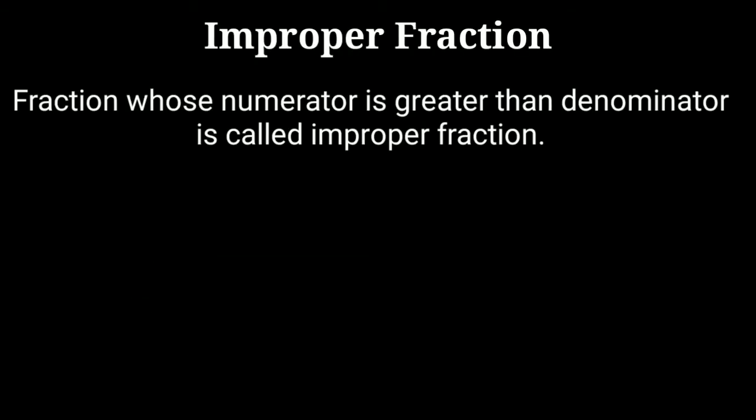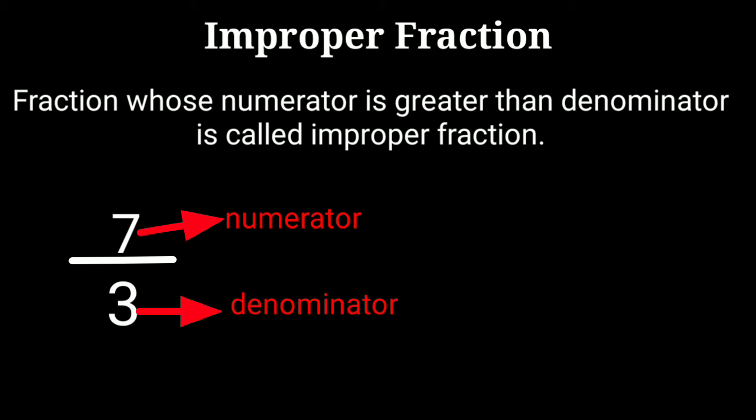What is improper fraction? Fraction whose numerator number is greater than denominator is called improper fraction. Like 7 upon 3, here 7 is numerator number and 3 is denominator number.